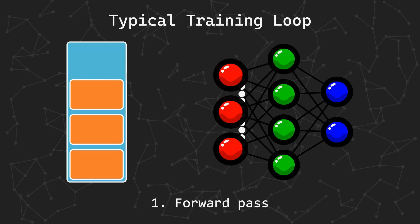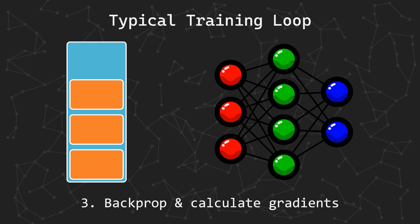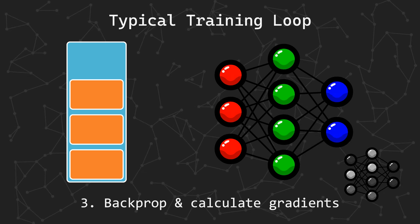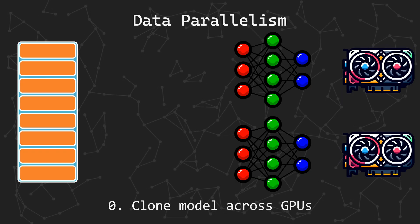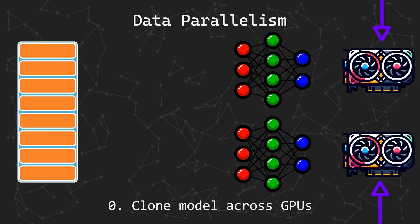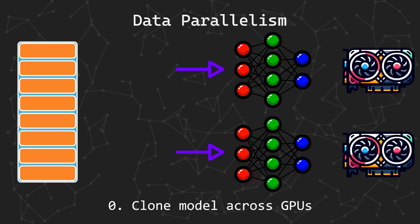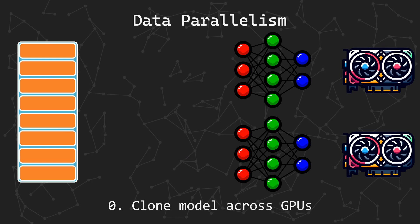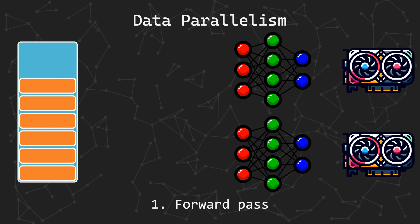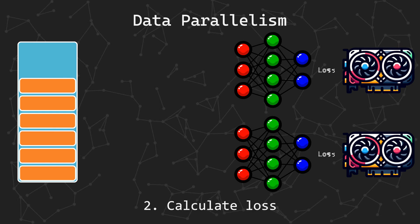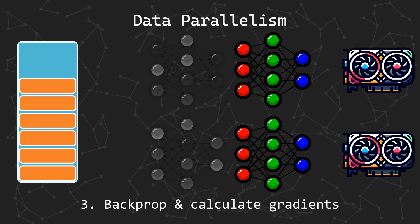The basic way to train a model involves dividing the dataset into batches. For each batch, we first perform a forward pass through the network, calculate the loss, then perform backpropagation to compute the gradients, and finally update the network parameters by stepping our optimizer.